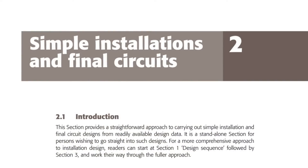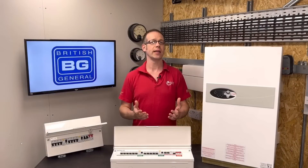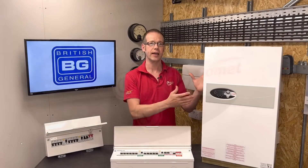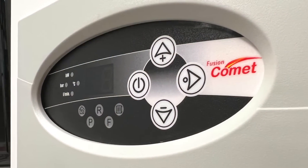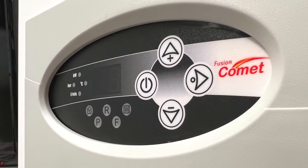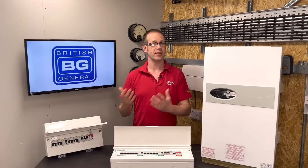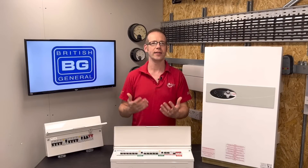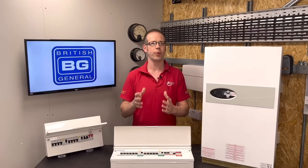Throughout this series of videos we're going to be carrying out the design calculations required to figure out how to supply a 9 kilowatt Fusion Comet electric boiler from The Electric Heating Company. Often when people start talking about designing an electrical circuit they go piling straight into calculating design current, but there's a really important step to take first.